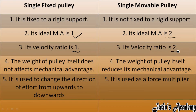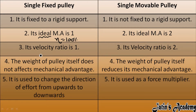Carefully note: for mechanical advantage they use the word 'ideal,' meaning efficiency is 100 percent. But for velocity ratio they do not use the word 'ideal.' This means that for an actual machine, only the mechanical advantage value will reduce, but the velocity ratio value will not reduce.